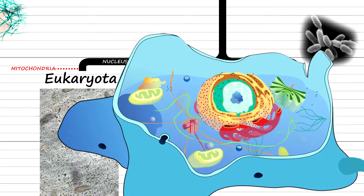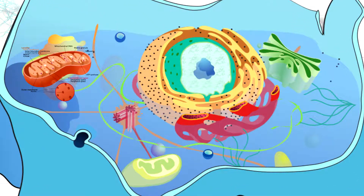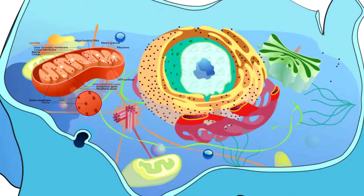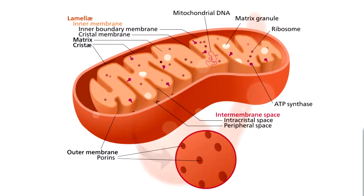Sometime soon after they evolved, an early eukaryote would absorb a prokaryotic cell and somehow not digest it. When the eukaryote reproduced, the prokaryotic cell would reproduce with it. And this is thought to be how mitochondria came to be part of our cells.